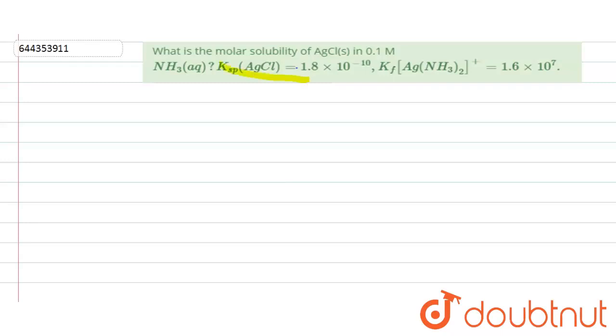We have to find out the molar solubility of AgCl. Ksp value is given and Kf value is also given, it is 1.6 × 10^7. Now what is the molar solubility of AgCl in 0.1 molar NH3 aqueous medium?